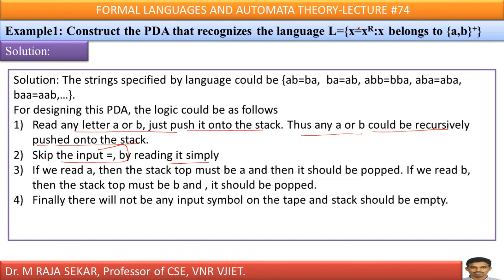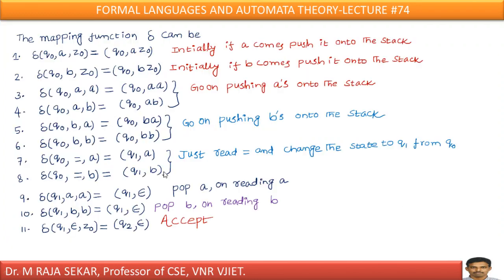If you read this equal to symbol, just skip the input, just change the state. It is simply similar to WC W power R. Just see, Q naught, initially, if A comes, push onto the stack. Initially means top of the stack is Z naught. Initially, if B comes, push onto the stack.